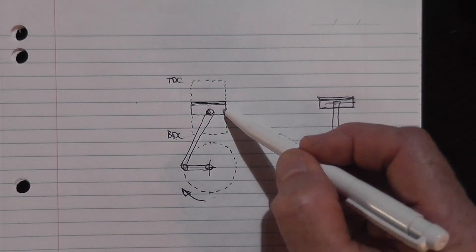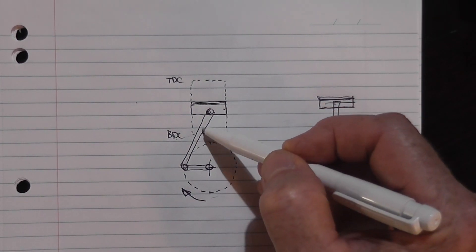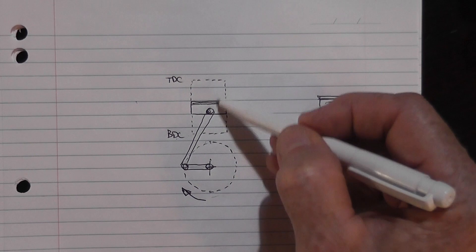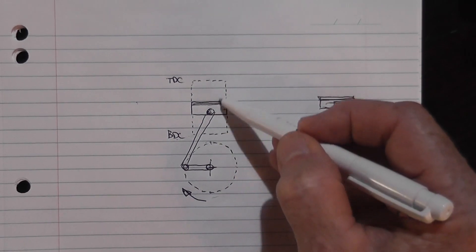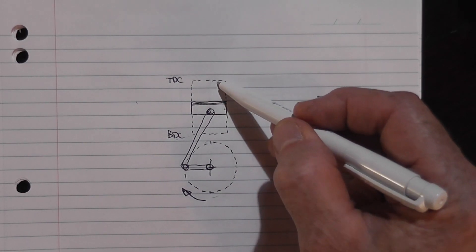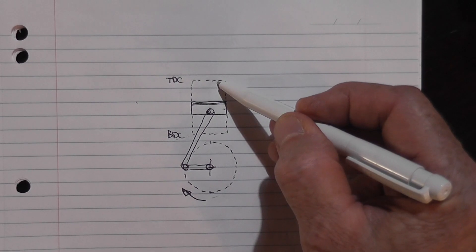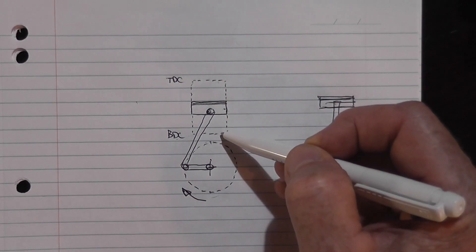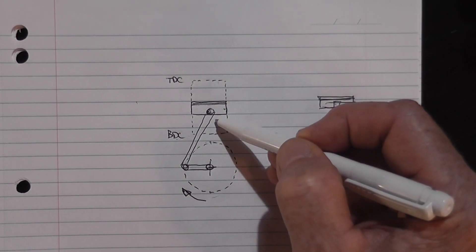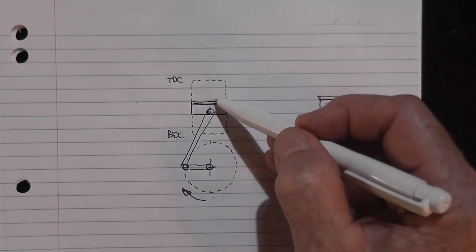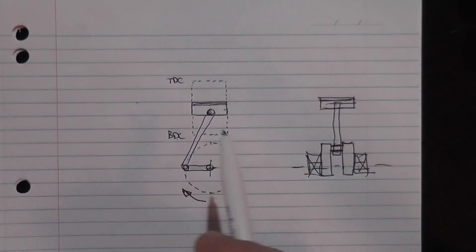So you've got this weight of this piston and part of this con rod that's reciprocating. It goes up, slows down, comes to a complete stop very momentarily and reverses and does the same thing at the bottom, slows down, stops, reciprocates back up in the other direction.